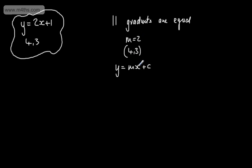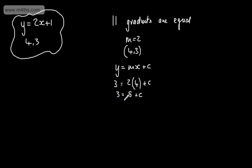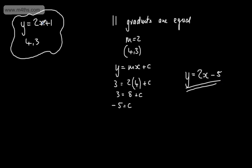Substituting in the values, we can solve for c, and then write the equation of the line parallel to y equals 2x plus 1 that passes through the point (4, 3). Substituting in: y-coordinate is 3, m is 2, x-coordinate is 4, plus c. So 3 equals 8 plus c, which gives us c equals minus 5. Therefore the equation of the line is y equals 2x minus 5.